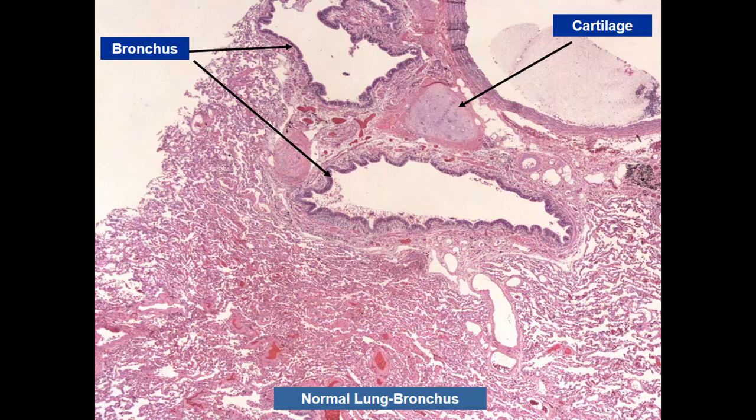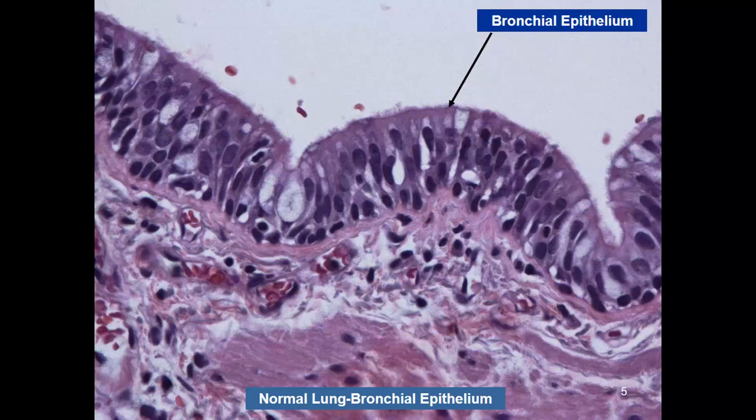In the lung, there's a bronchus — you know it's a bronchus because of two things: first, it has cartilage, whereas bronchioles do not. Second, the bronchus has a respiratory-type epithelial lining. The bronchus also has submucosal glands, which produce mucin to trap foreign objects. There are cilia to help clear these things out, and cartilage keeps the large airways open.